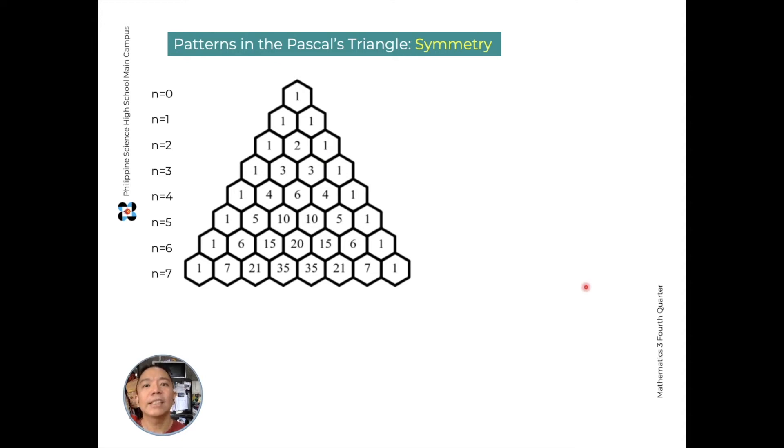Now let's take a look at some patterns that we can find in Pascal's Triangle. Starting with the most basic, the symmetry. You could see that if we draw a line in the middle, the values on the left side and the values on the right side of our triangle are the same.